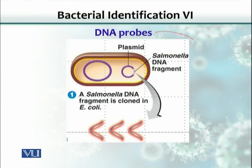A DNA probe could be produced using DNA amplification by biotechnology, where we can insert the gene of interest that is specific to the organism, amplify it, and later take it out of the plasmid system from a microorganism like E. coli, for example.